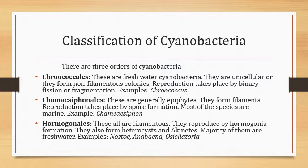Second is Chamaesiphonales — these are generally water epiphytes. An epiphyte is an organism that grows on the surface of a plant and derives its moisture and nutrients from the air, rainwater, or debris accumulating around it. They form filaments. Reproduction takes place by spore formation. Most of the species are marine. Example is Chamaesiphon.